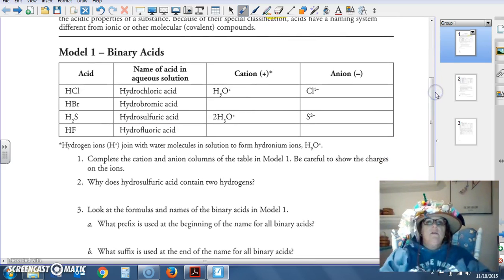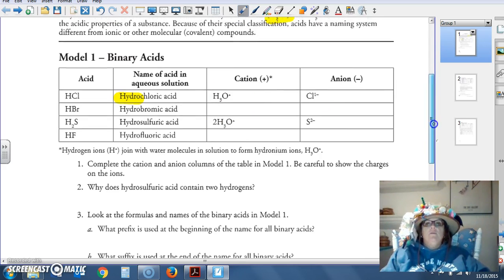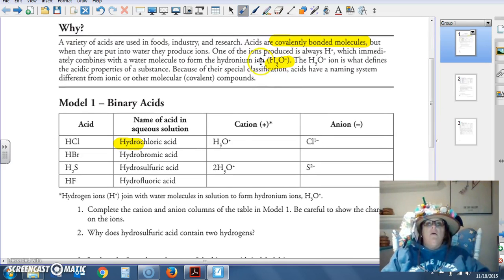Binary acids. Notice we have HCl. The name of the acid is hydrochloric acid. The cation that it produces, it talked about we always produce a hydrogen ion that then bonds with the water. That gives us H3O with a plus one charge. The anion then is the second part, chloride.